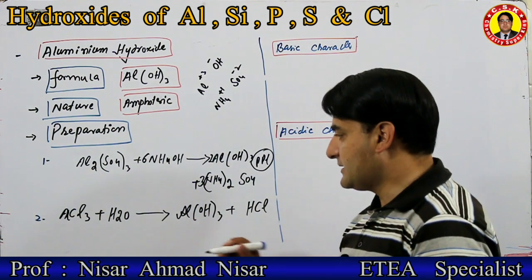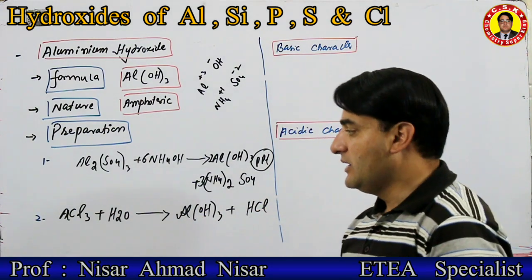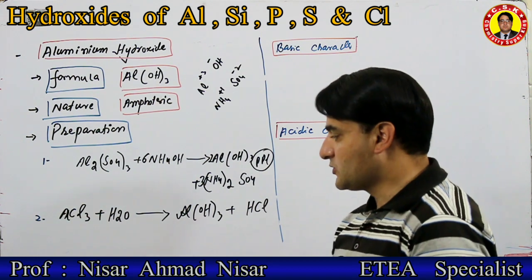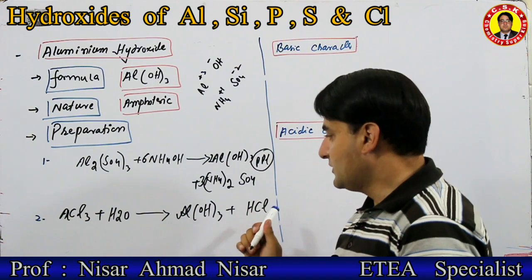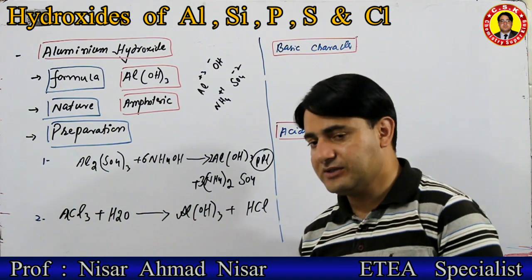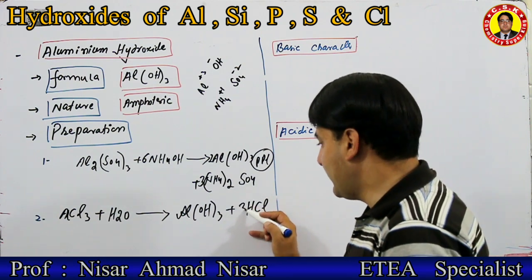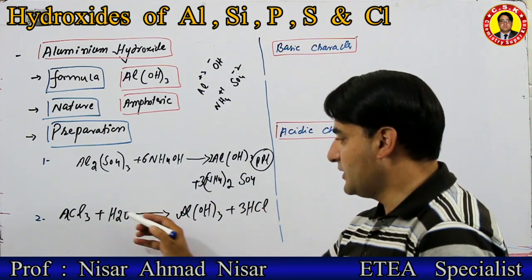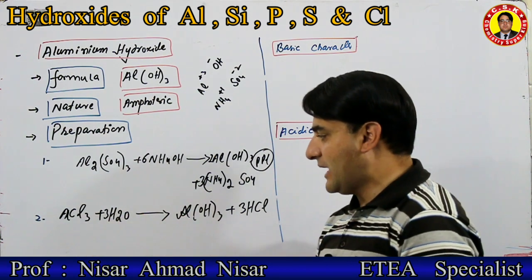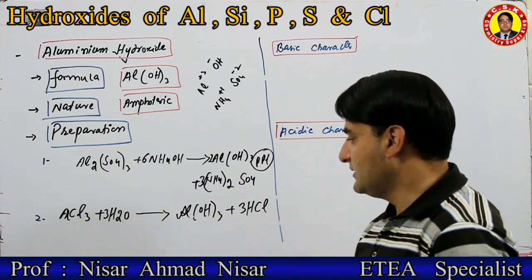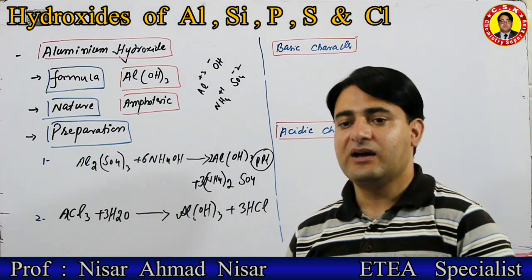اب equation balance کرنی ہے — chlorine یہاں پہ 3 ہیں تو HCl کے سامنے 3 لگائیں۔ Water کتنے ہونے چاہیے — 3 ہونے چاہیے۔ اب check کریں: 1 aluminium — 1 aluminium balance؛ chlorine 3 — 3 balance؛ hydrogen 3+3=6 balance؛ oxygen 3 balance۔ یہ دوسرا method ہے aluminium hydroxide بنانے کا۔